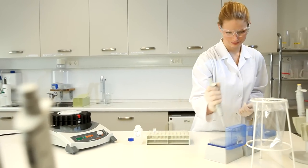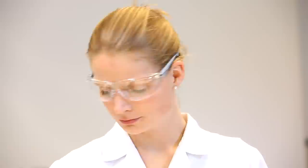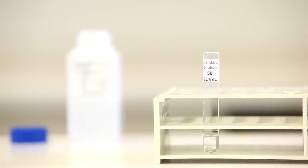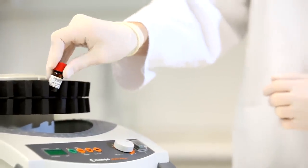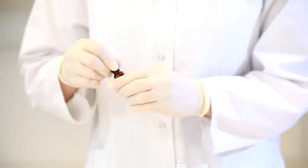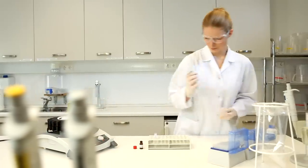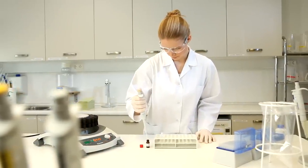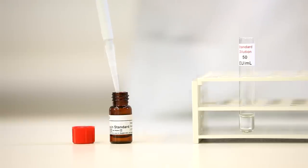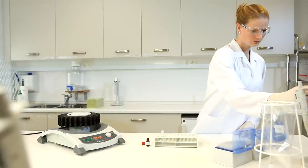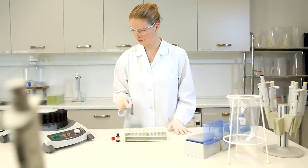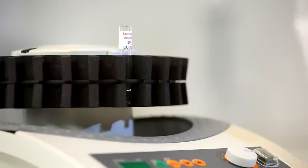For the dilution series, pipette 900 microliters of endotoxin free water into each test tube. Be sure to use endotoxin free glassware for all standard dilutions and samples. Avoid using plastics. To prepare the first dilution with an endotoxin concentration of 50 EU per milliliter, add 100 microliters of endotoxin standard solution. Vortex for 2 minutes.